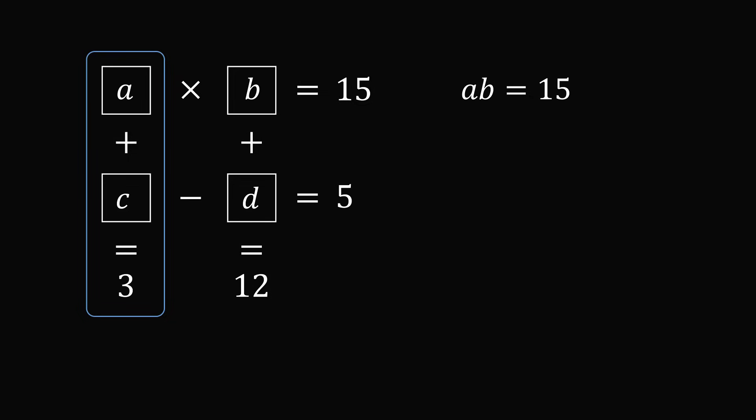Let's go to the first vertical line and we have the equation a plus c is equal to 3. In the second vertical equation we have b plus d is equal to 12. Finally, the second horizontal equation is c minus d is equal to 5.